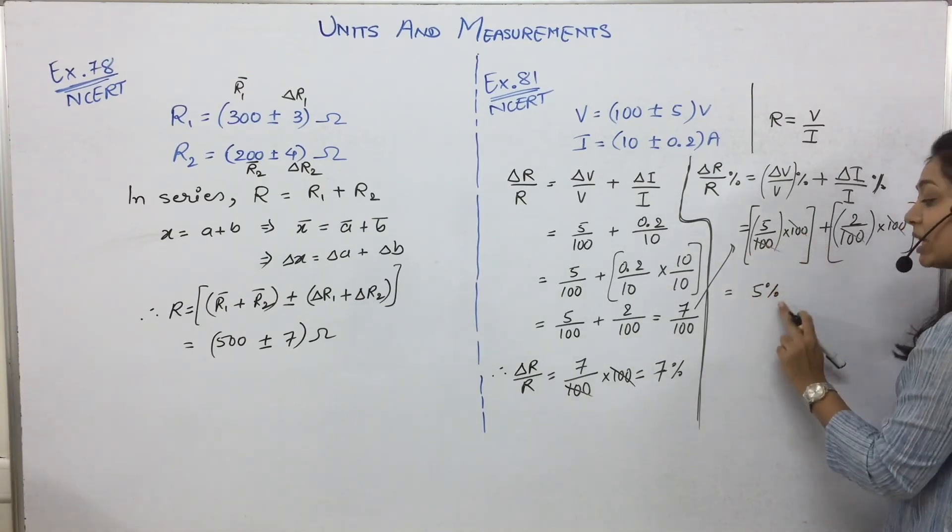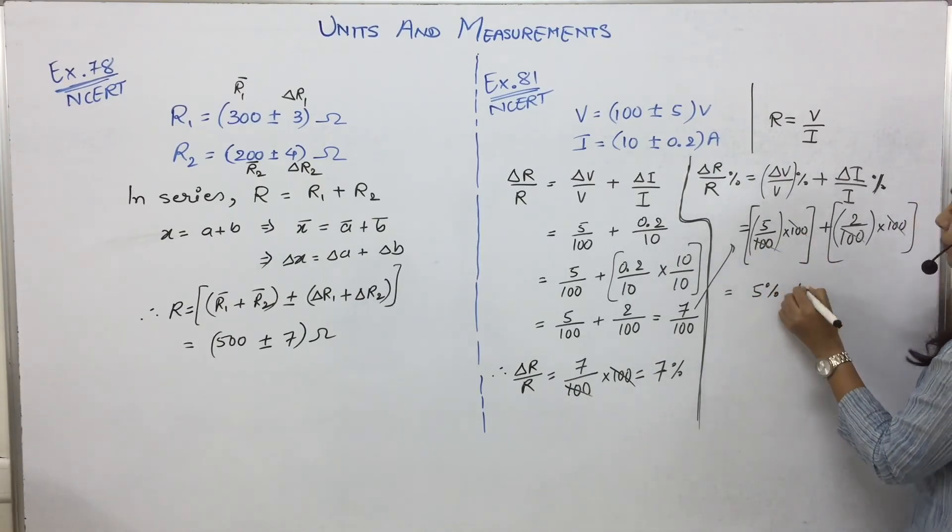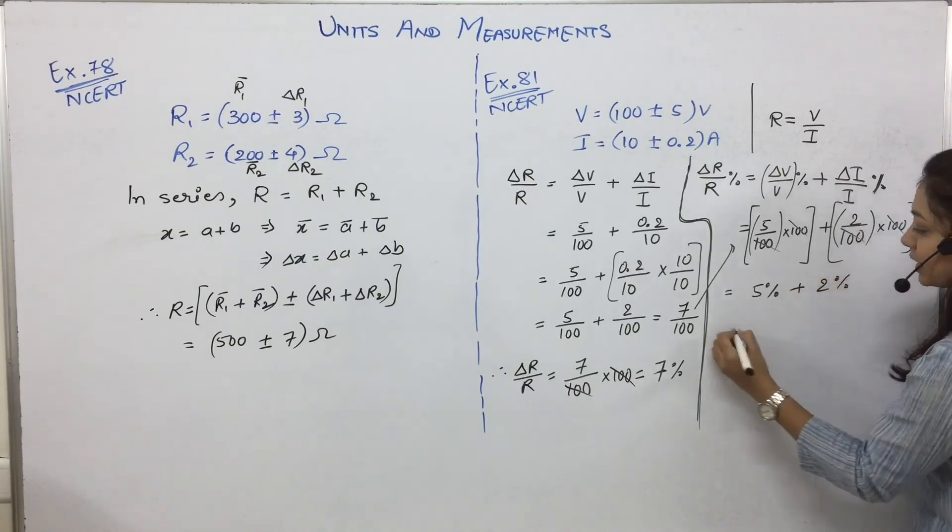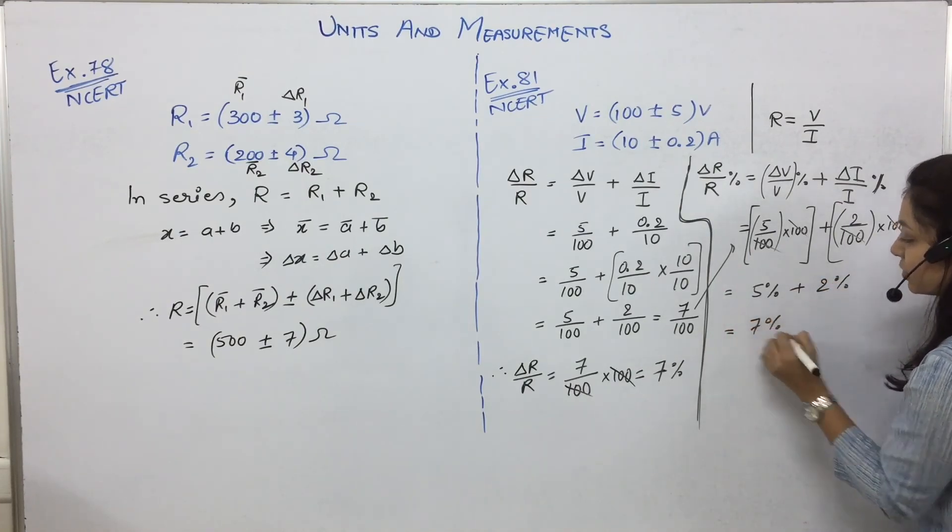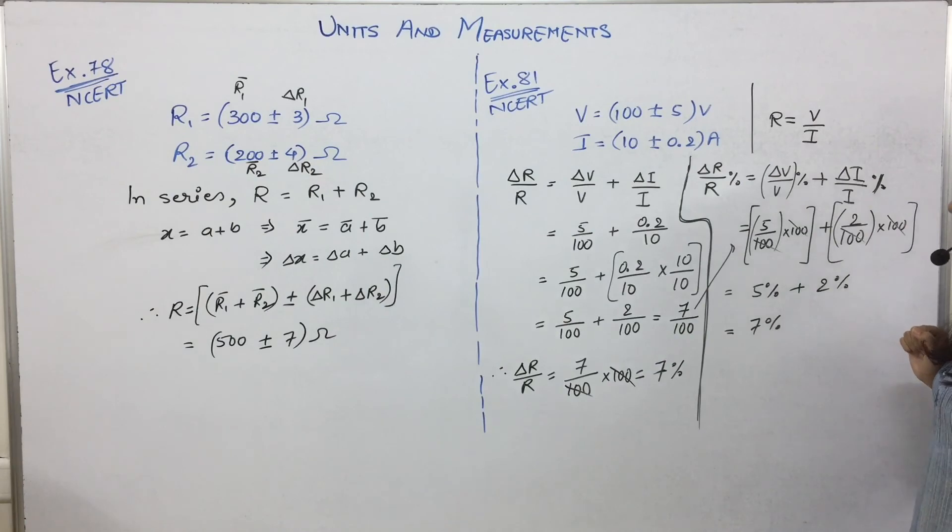Multiplied by 100, now symbolically we can write plus 2 percent is equal to 7 percent. Done. Clear? So we have found out percentage error in R is equal to 7 percent. I hope this is clear to everyone. Done.